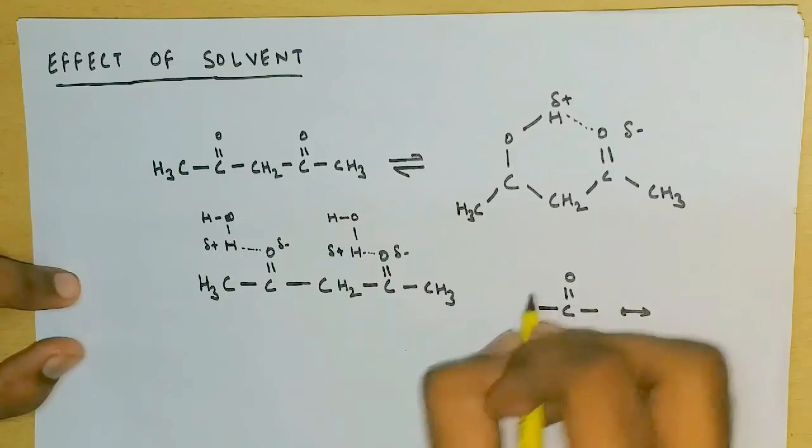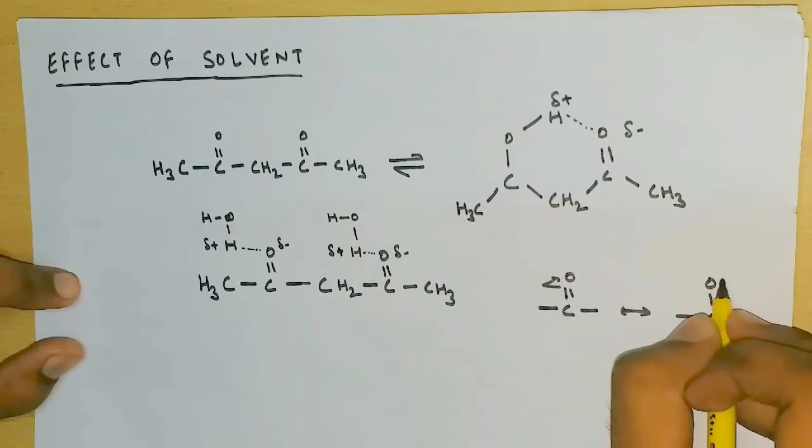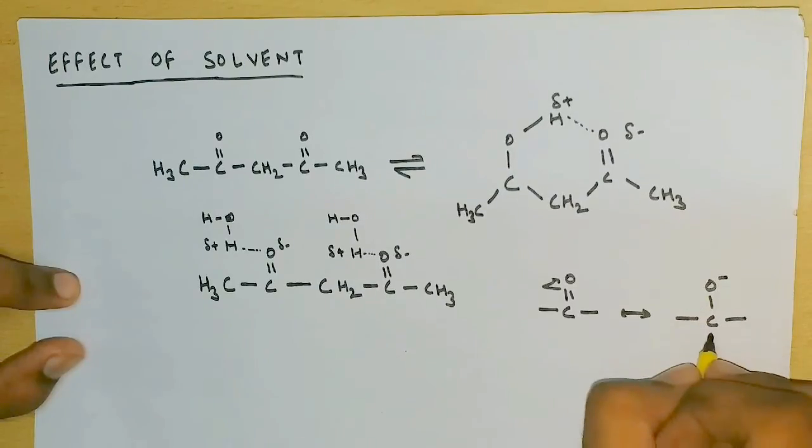The carbonyl group has two resonating structures, and in the second structure we can see that the oxygen has a negative charge.